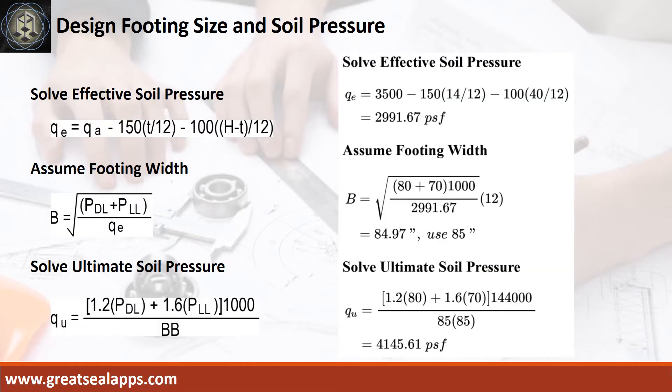Given allowable soil pressure equals 3500 PSF. Assumed footing depth equals 14 inches and depth from natural grade line equals 4 feet 6 inches. The effective soil pressure is 2,991.67 PSF. Given actual dead load of 80 kips and actual live load of 70 kips, the assumed footing width is 85 inches and the ultimate soil pressure is 4,145.61 PSF.